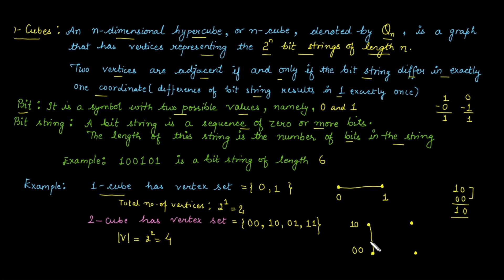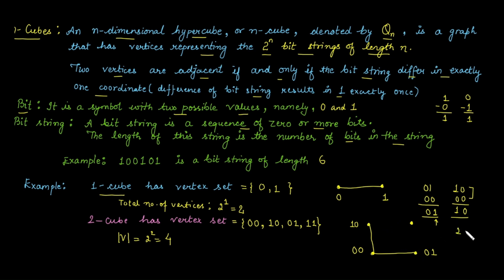The difference of 10 and 00 gives exactly one 1, so they are adjacent vertices. Next, consider 00 and 01: their difference gives 1 minus 0 equals 1 and 0 minus 0 equals 0 — we get a 1 exactly once, so they are adjacent. Now consider 10 and 01: their difference gives 1 in both positions — we get 1 two times, not exactly once, so they are not adjacent.